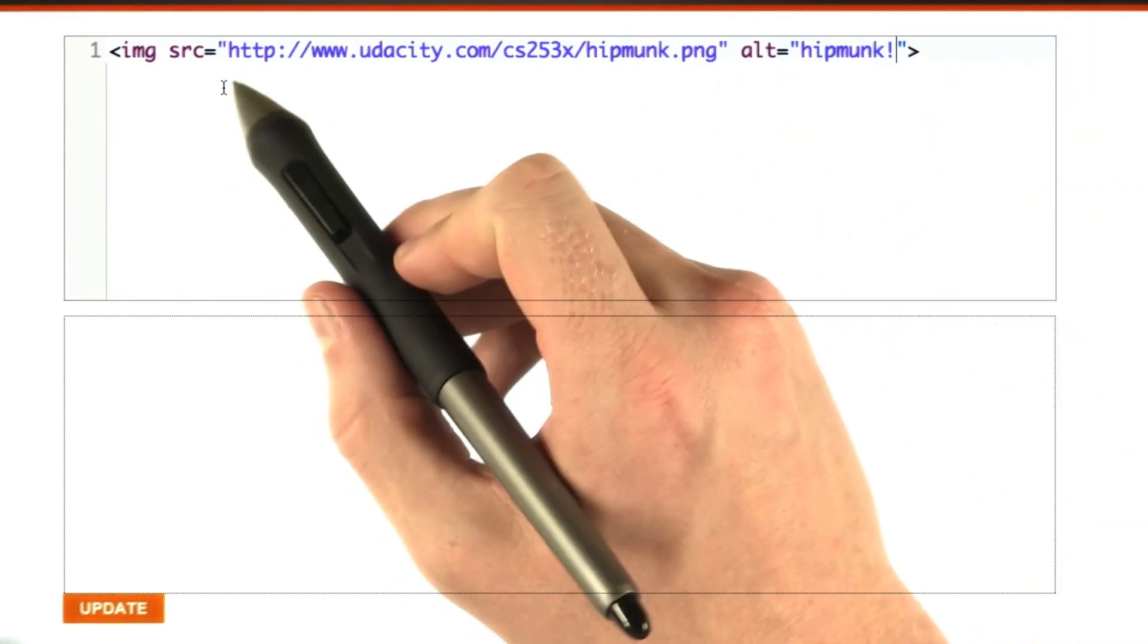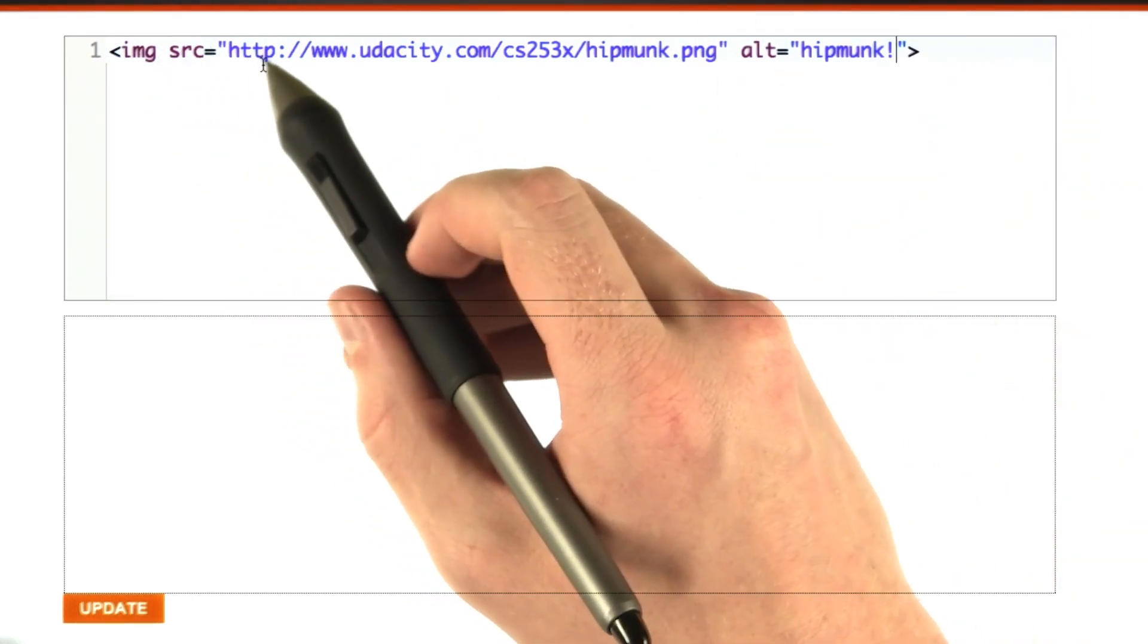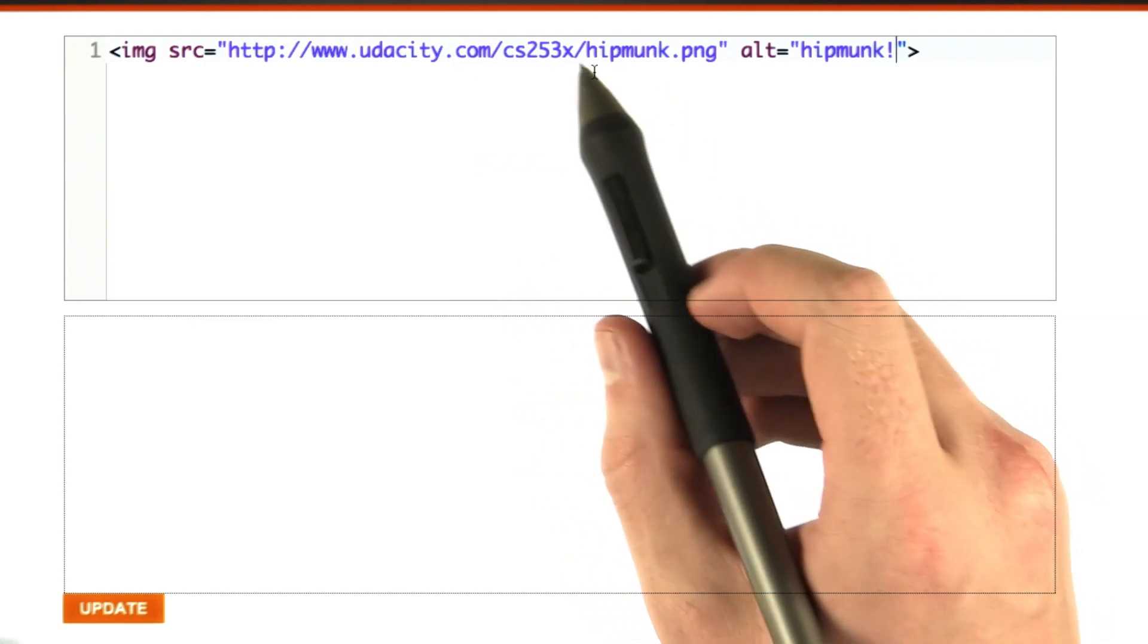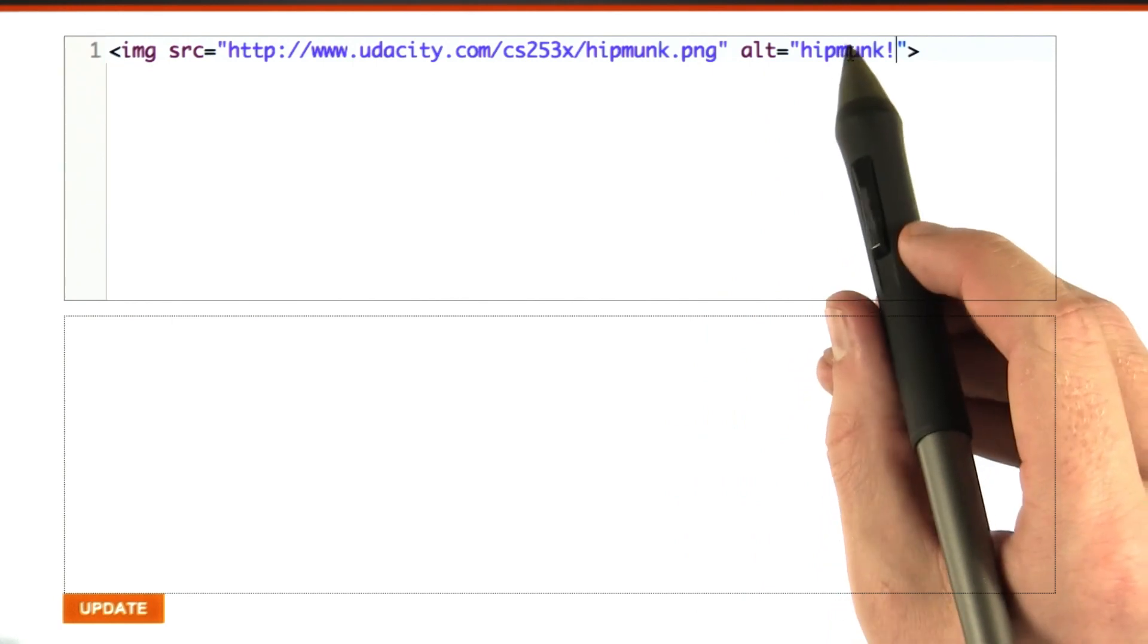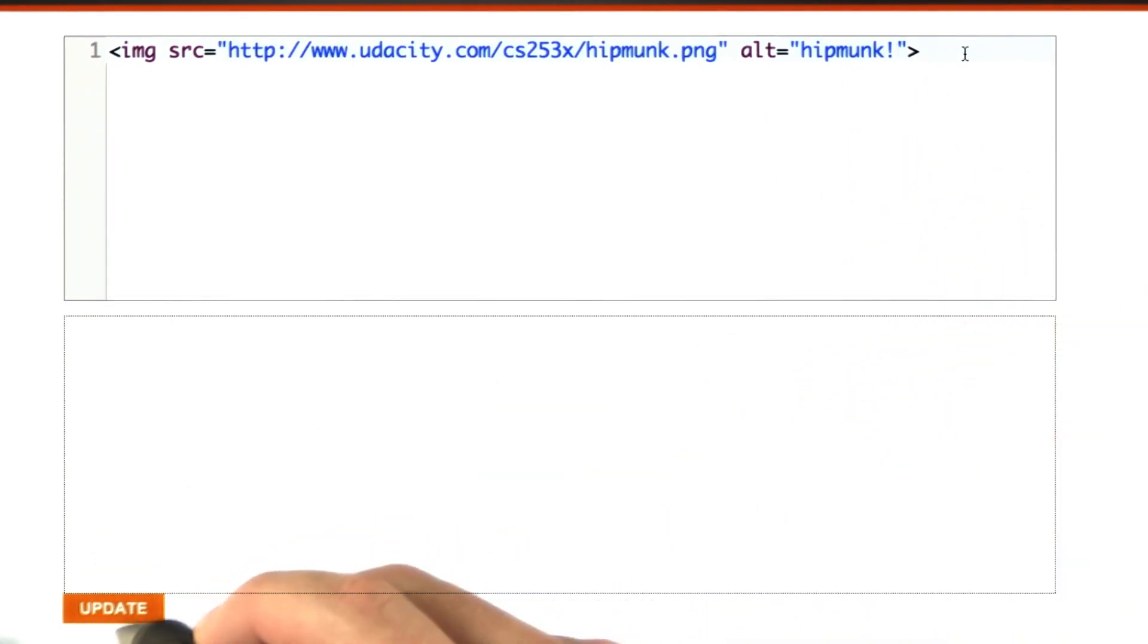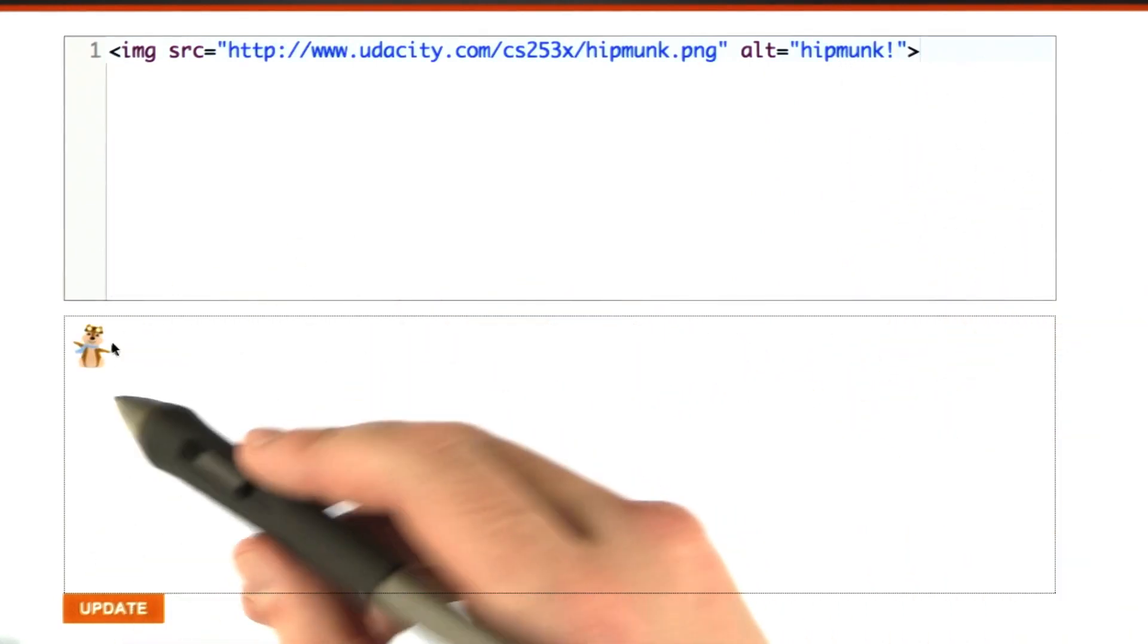Okay, so we've got our image tag. Source equals udacity.com/cs253x/hipmunk.png. This is our URL of an image that I've prepared for us. We've got some alt text there. Let's go ahead and click update. And ta-da, there's our image.